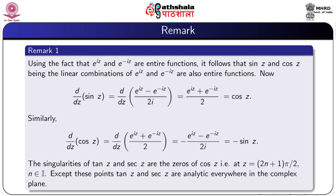We know that e^(iz) and e^(-iz) are both entire functions. Since sin z and cos z are linear combinations of e^(iz) and e^(-iz), we can say that sin z and cos z are both entire functions. Now, d/dz of sin z equals d/dz of (e^(iz) - e^(-iz)) / (2i), which equals (e^(iz) + e^(-iz)) / 2, giving cos z.